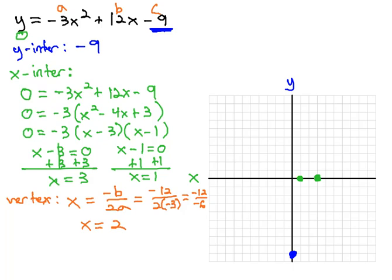We still need to find the y-coordinate of the vertex. We now know that x is equal to 2, and so we will replace each of the x's with 2. This gives us y is equal to negative 3 times 2 squared, plus 12 times 2, minus 9.